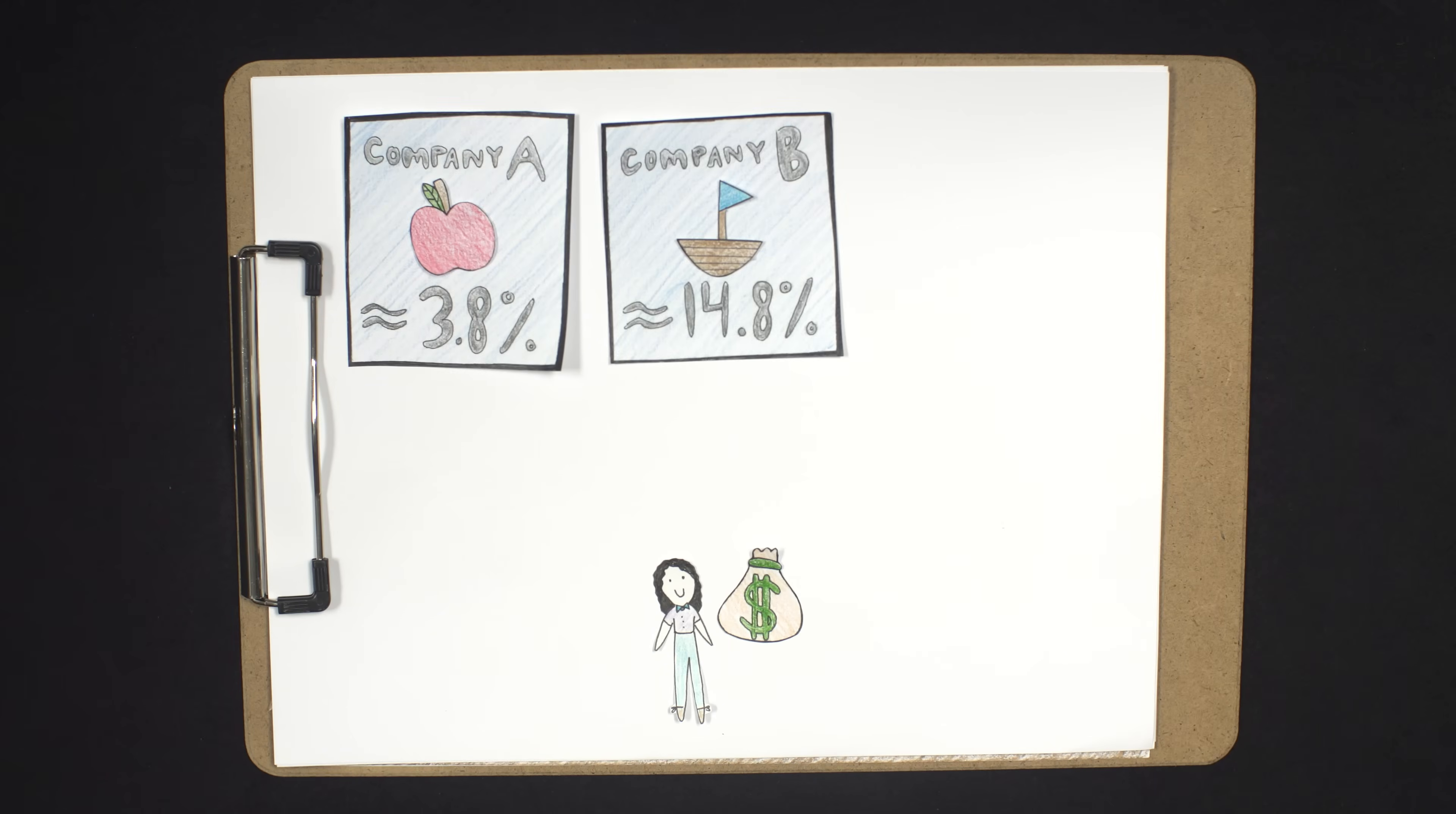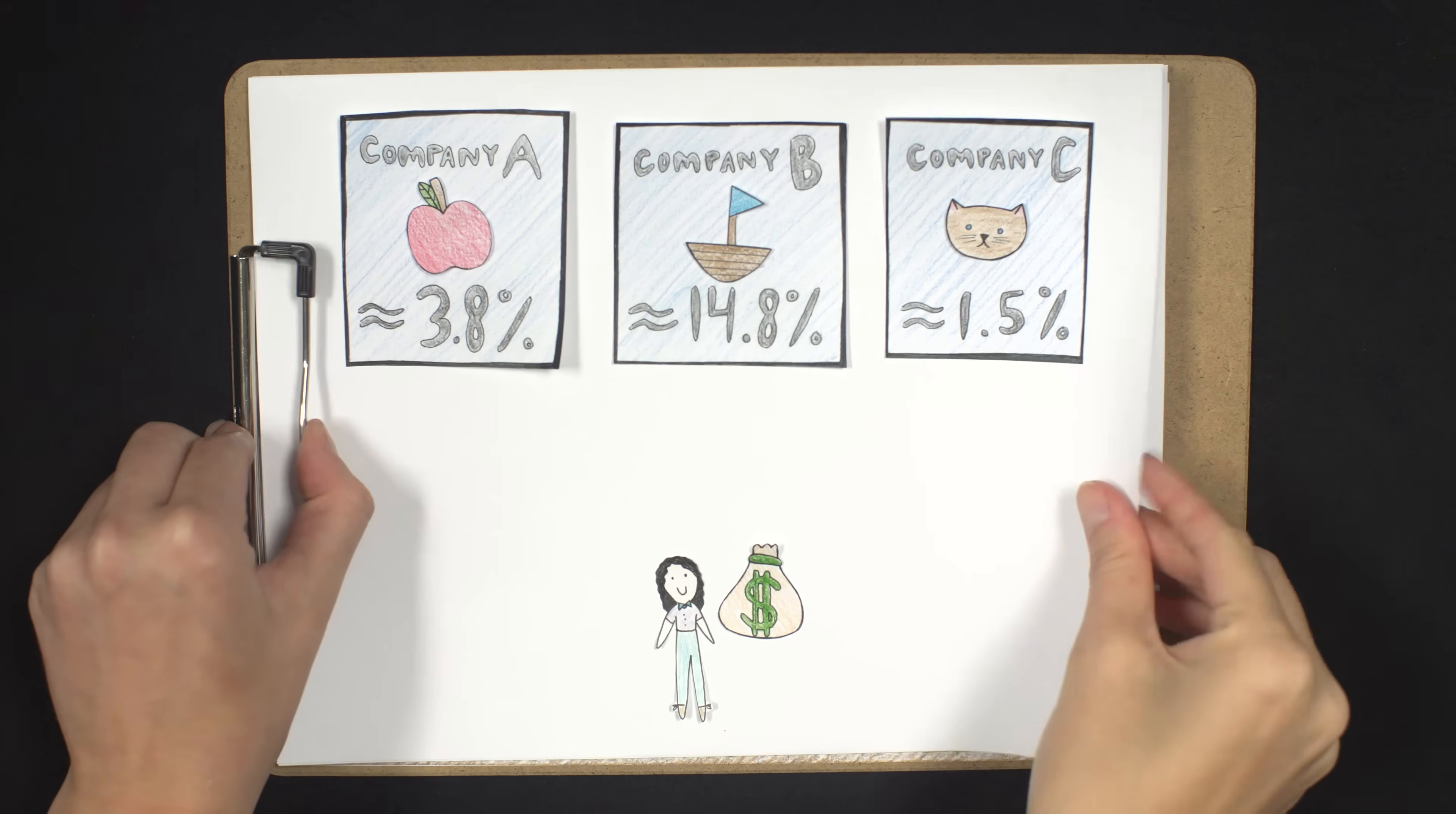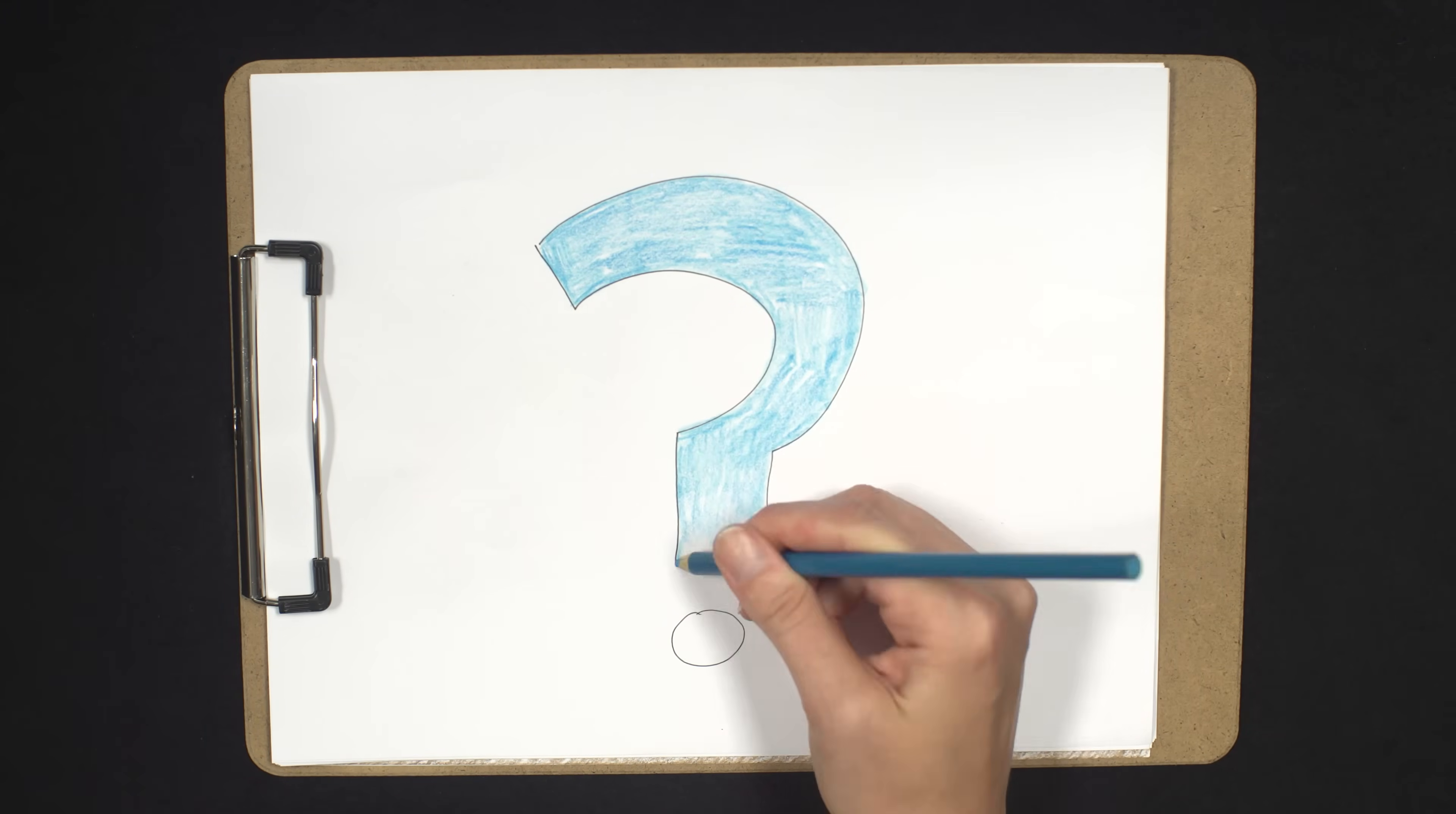We now have our three rates of return. It seems clear that we'd want to invest in Company B. After all, its rate of return, or yield, is so much higher than the other two investments. But stop and ask yourself this question. Why on earth is Company B offering such a high yield? And why isn't everyone jumping on this great deal?